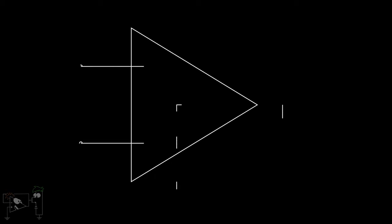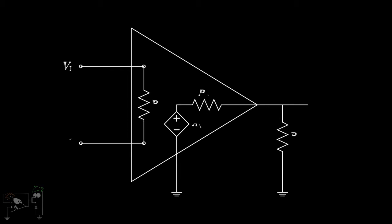Throughout this course, we will be assuming ideal op-amps unless specified otherwise. Recall the characteristics of an ideal op-amp. It has infinite gain, infinite input impedance, and zero output impedance.